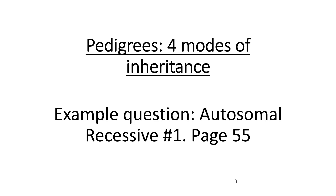We're going to take a look at pedigrees and four modes of inheritance. The example question is on page 55 and it covers the first mode of inheritance called autosomal recessive. Autosomal means these traits or genes are found on autosomal chromosomes, and being recessive means you must have two recessive alleles before you express that trait or disorder.